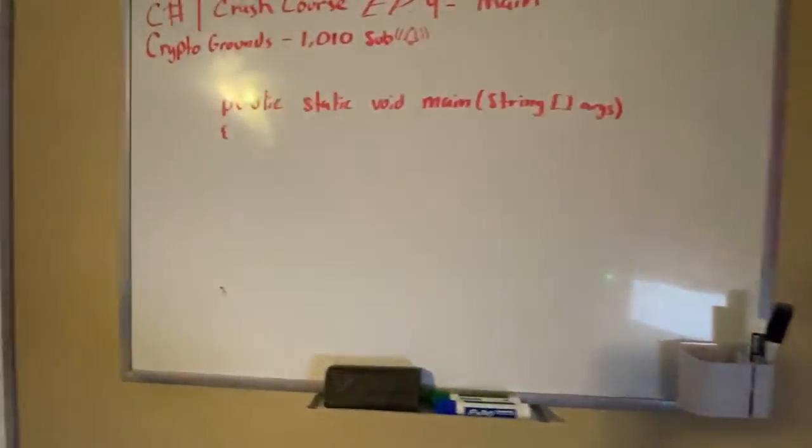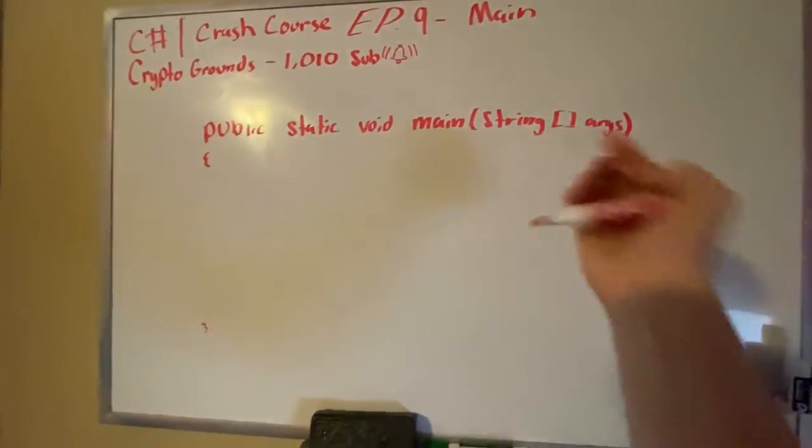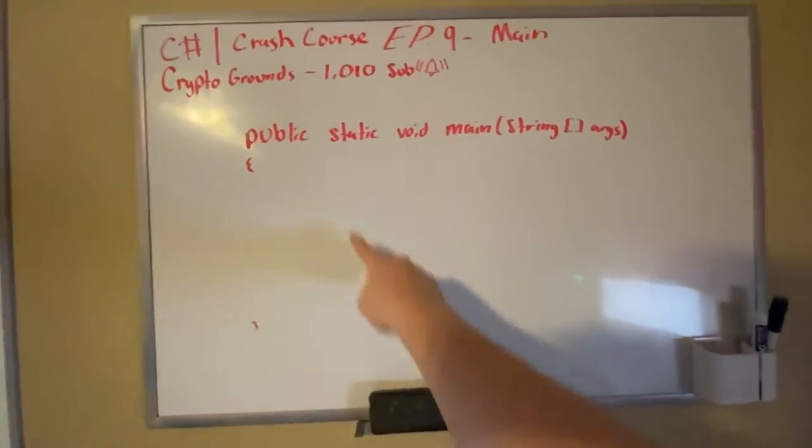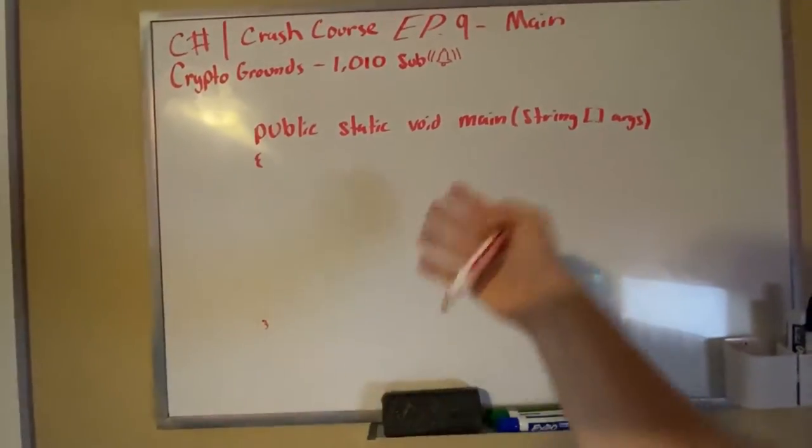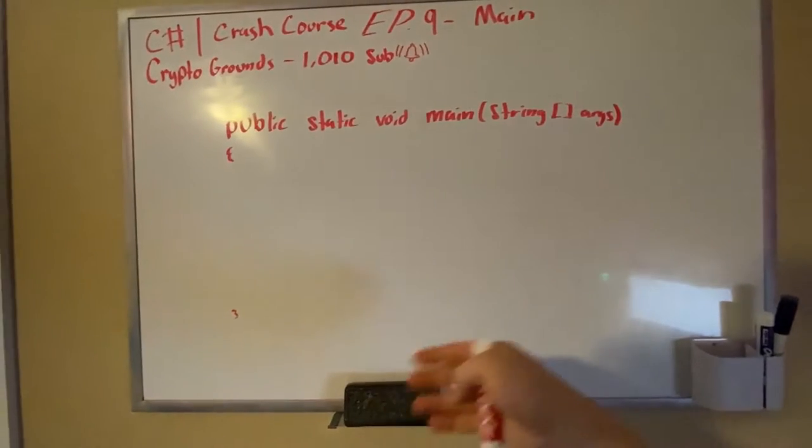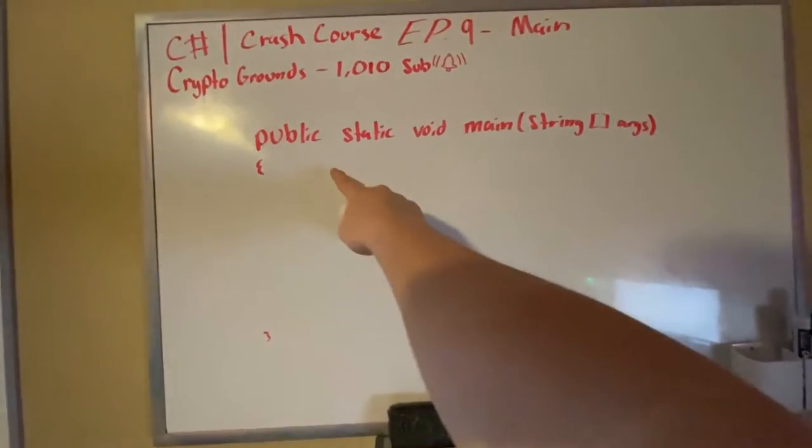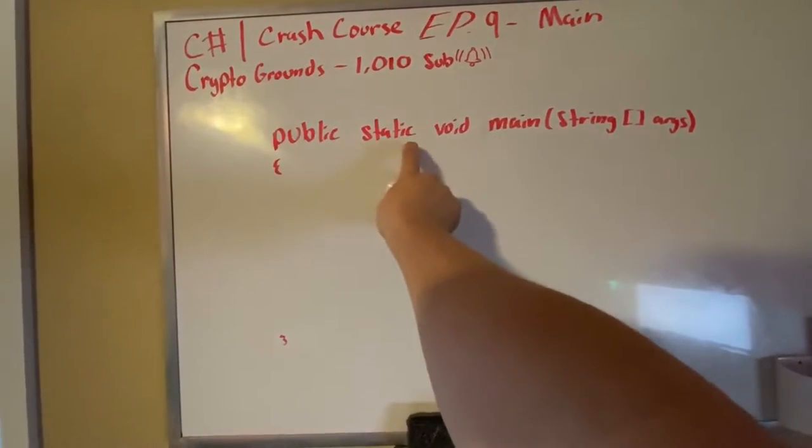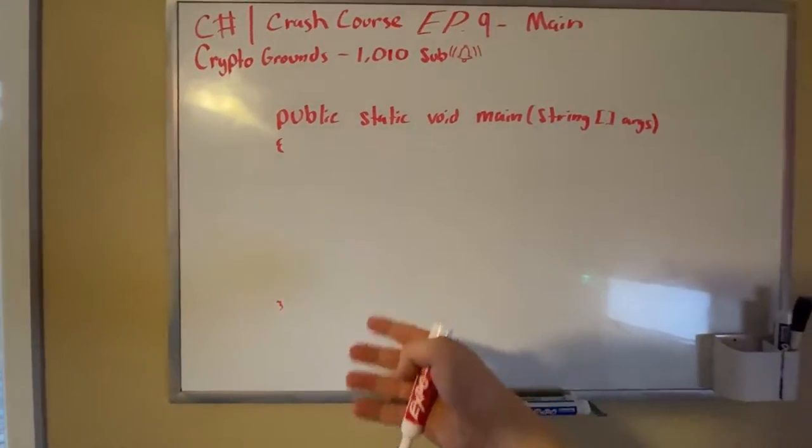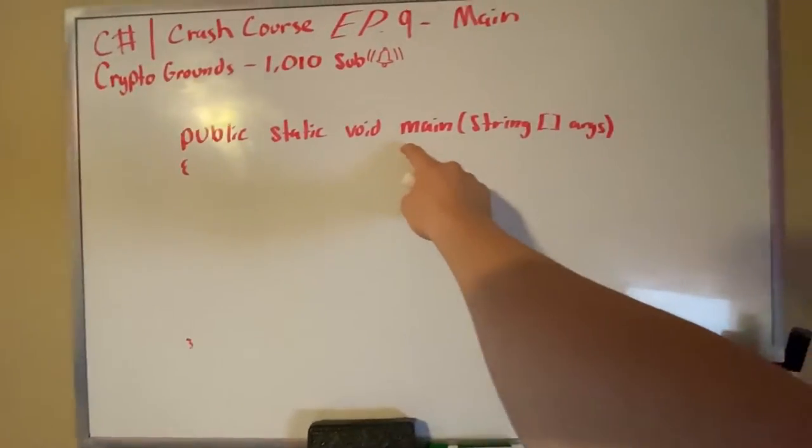So basically, this is the method that we use to start the whole program. Now, the reason why it's static is because we want to be able to use this wherever. When we run this in our IDE, it will be able to use static since it can be used anywhere. It will be able to directly call our main method and start the whole thing.